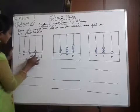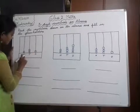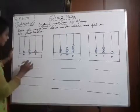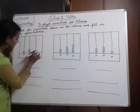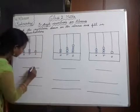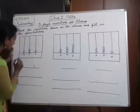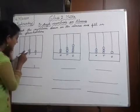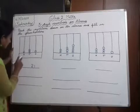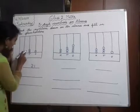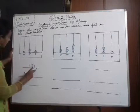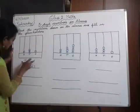First, see they have given 1s, 10s, 100s and they have drawn the balls also. First, in the 1s place, how many balls are there? 1 ball is there, so you have to write 1. Next, in the 10s place, how many balls are there? 2. Next, in the 100s place, how many balls are there? 1. So, 121 is here.